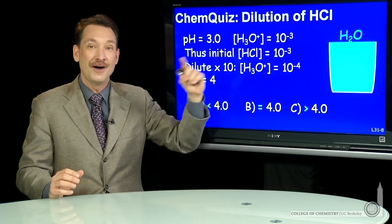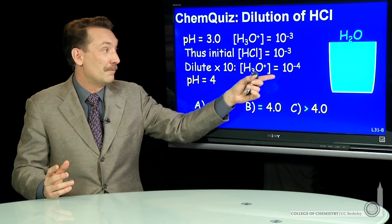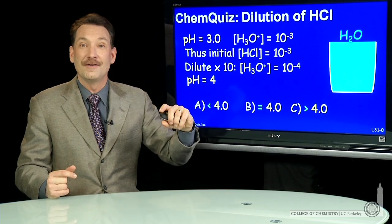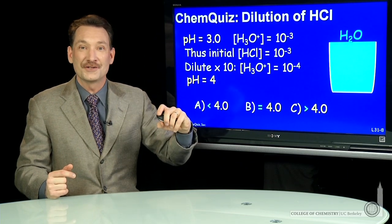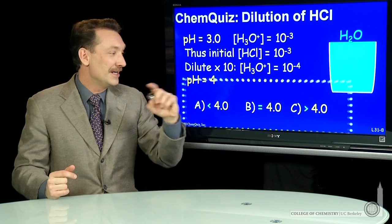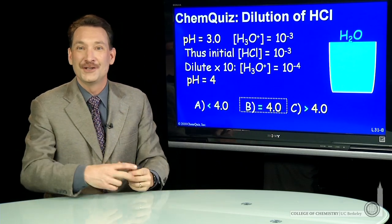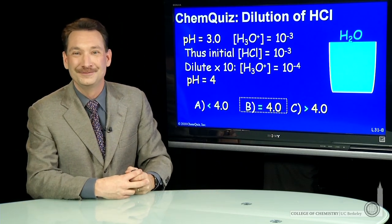Calculate the pH now. The pH is -log of 10⁻⁴, which equals 4. The correct answer is that the pH changes from 3 to 4.